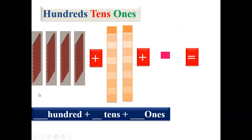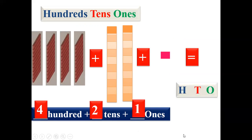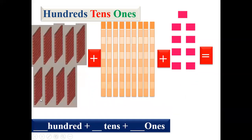Look at the next one — it is one, two, three, four — write here four hundreds. How many tens columns? One, two — two are there, we'll write two. And how many ones? We can see only one. So we'll write four in hundreds, two in tens and one in ones.